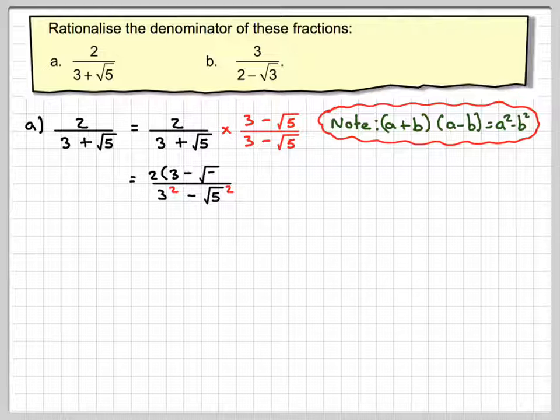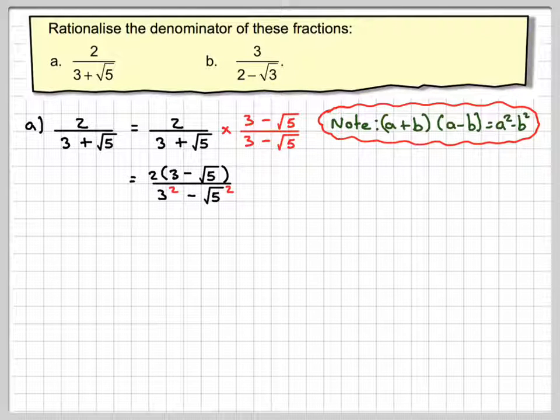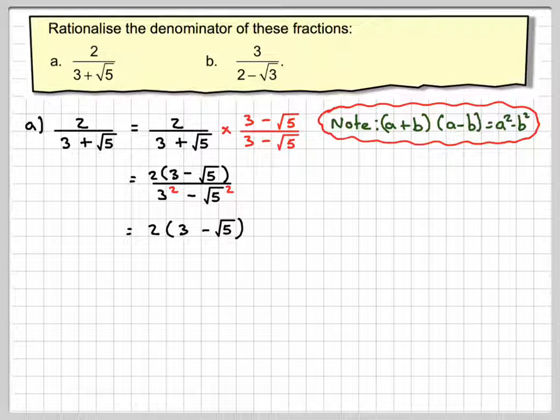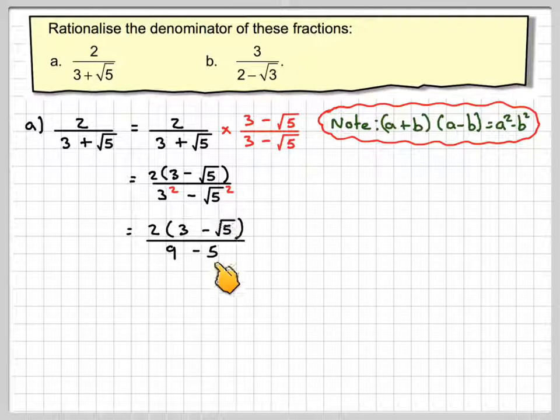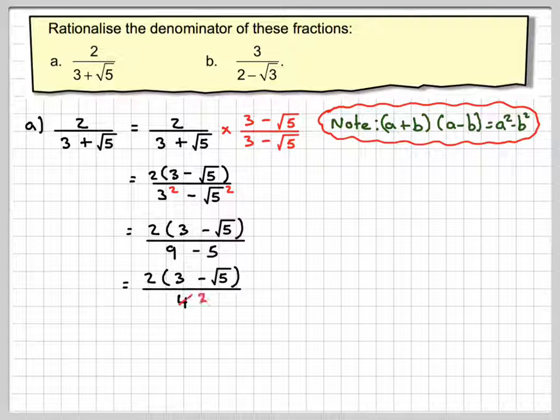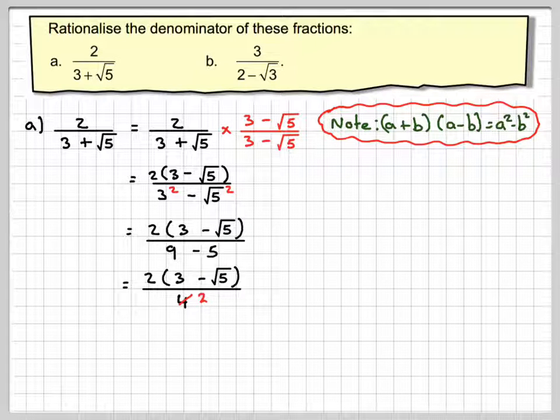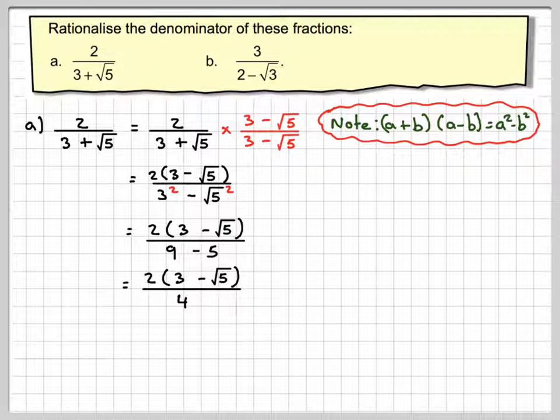On the top, we're just going to have 2 brackets, 3 minus root 5. So carrying on, leave the numerator to what it is, and 3 squared is 9, and then root 5 squared is 5 from what we did before. And then we're going to have the same on the top, and then 9 minus 5 will give me 4.